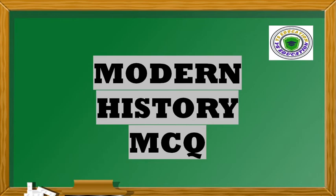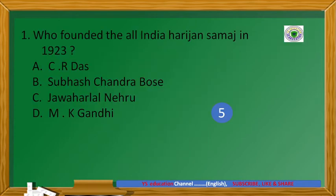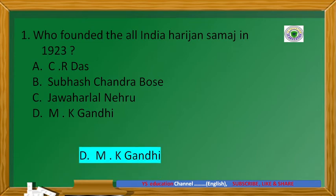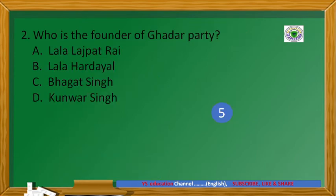Hello friend, welcome to Wise Regression. Today we'll discuss most important Modern History MCQs. First question: Who founded the India origin Samaj in 1923? Answer: DMK Gandhi. Who is the founder of the Ghadar Party?